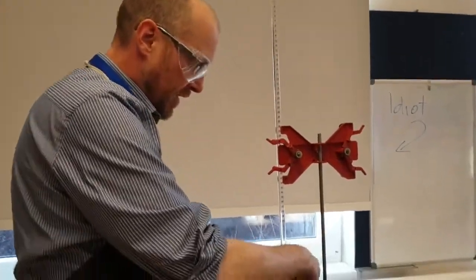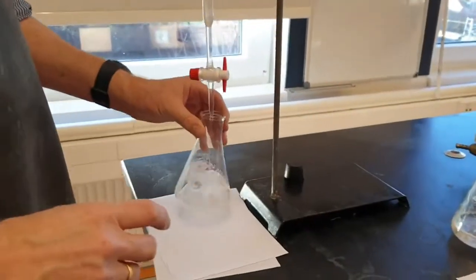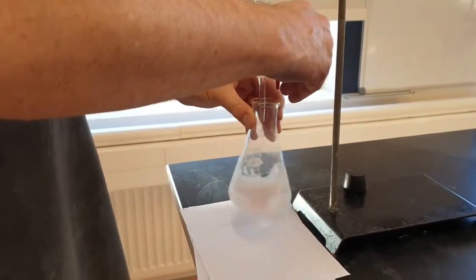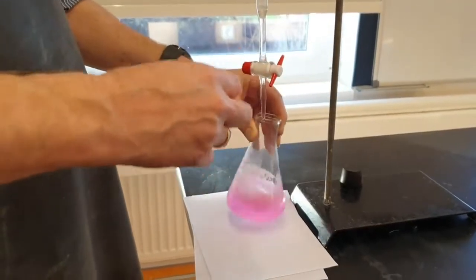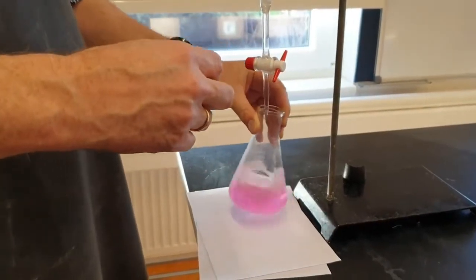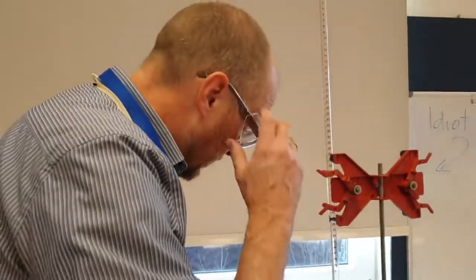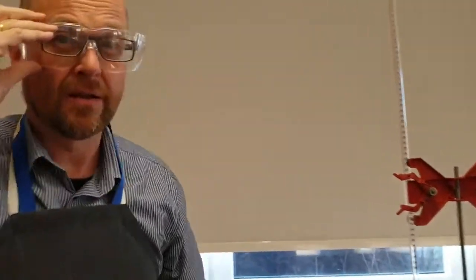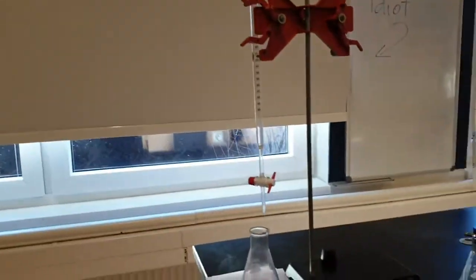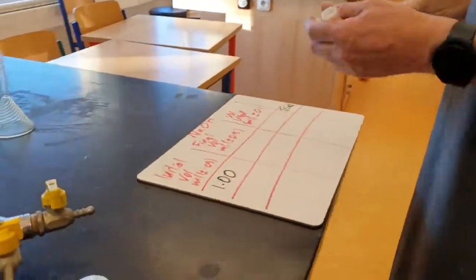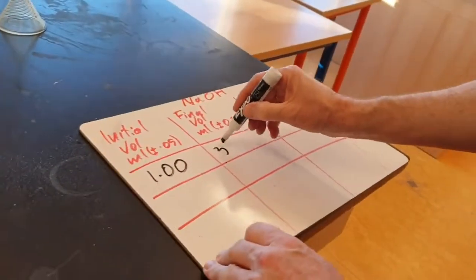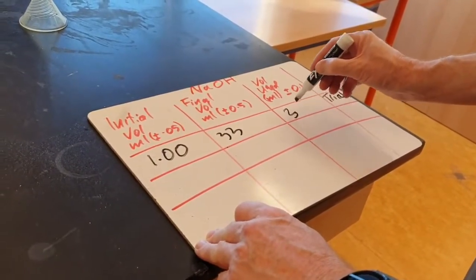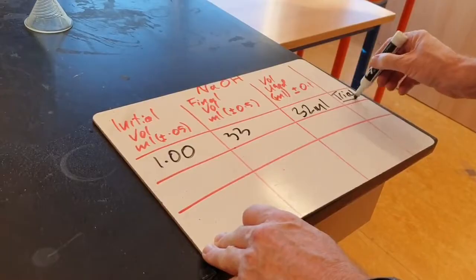So the first one is a trial. I'm just going to let it go and then stop when there's color change. Alright, so I've gone past the endpoint of the reaction. That's my trial. So what have I got here? I've got about 33, you don't have to be too accurate. So I come over to the data table, so 33 give or take, and so that's going to be 32 milliliters. But this is the approximate one, the trial.